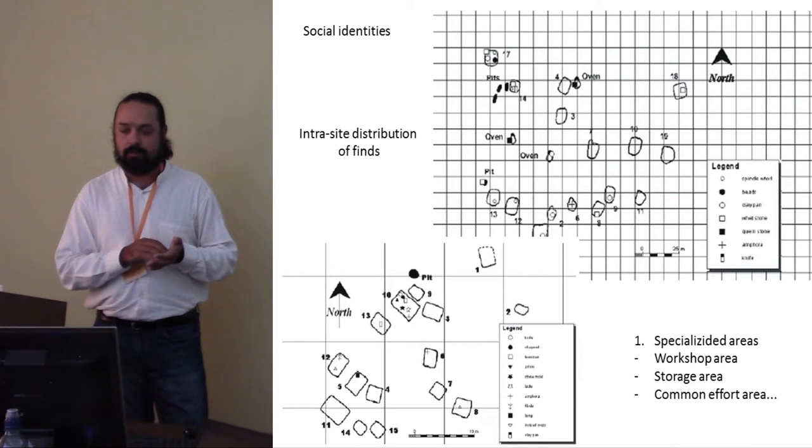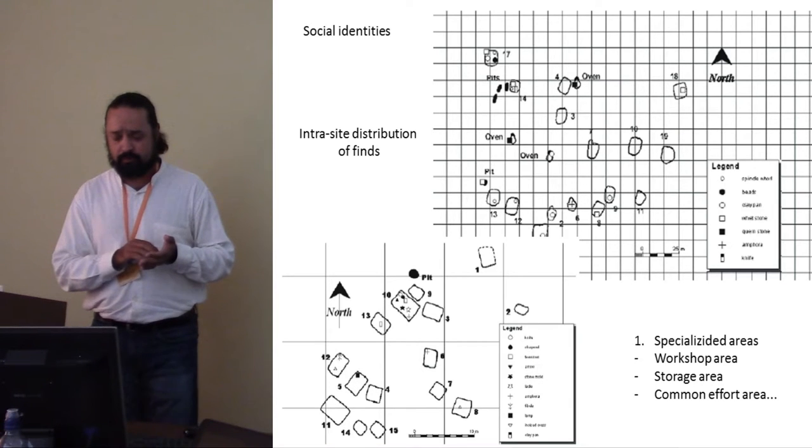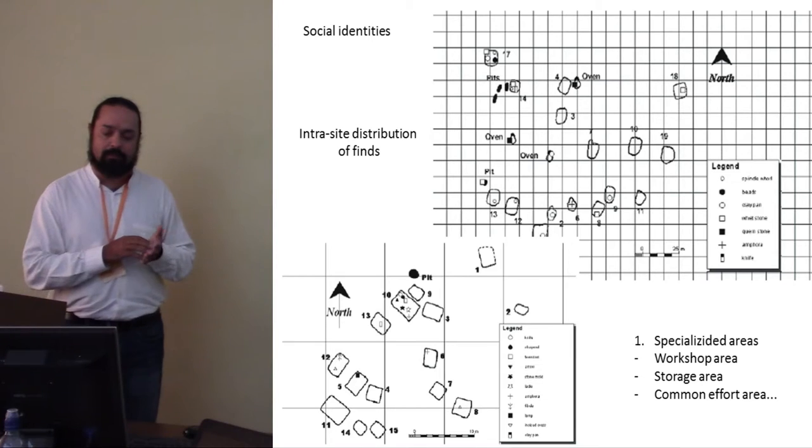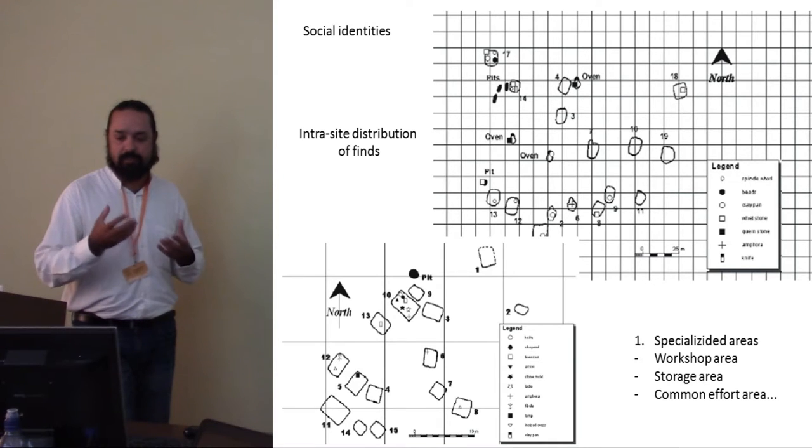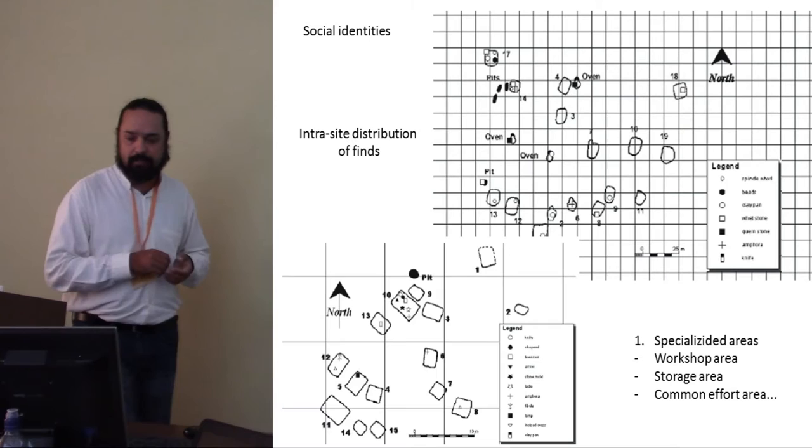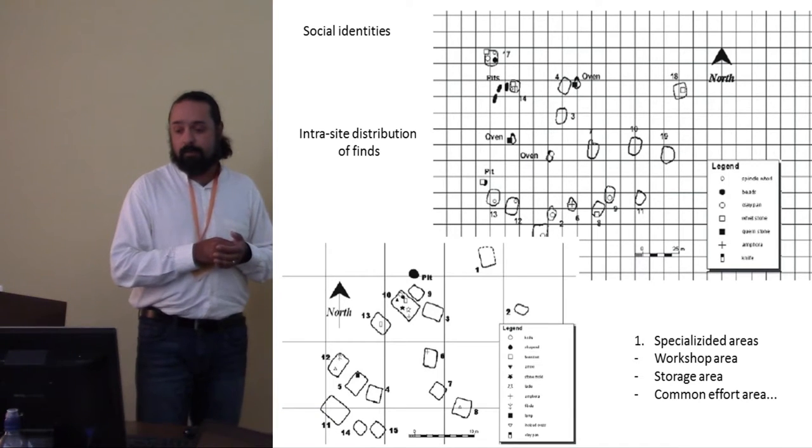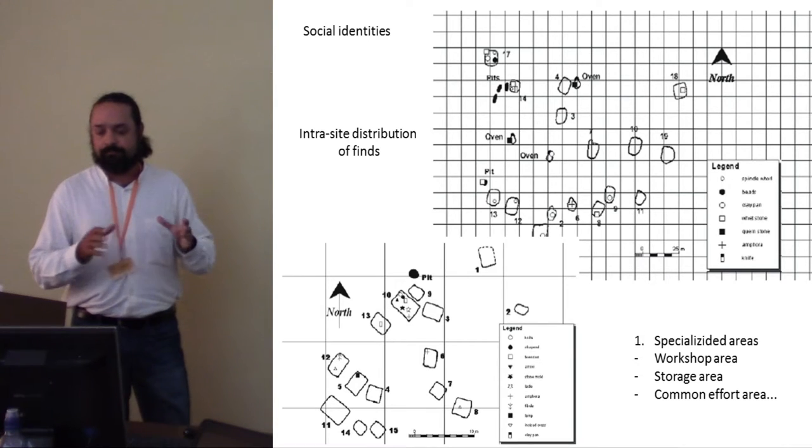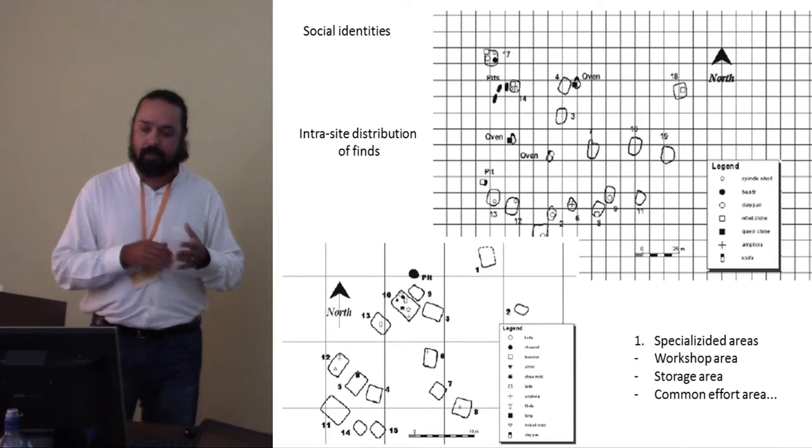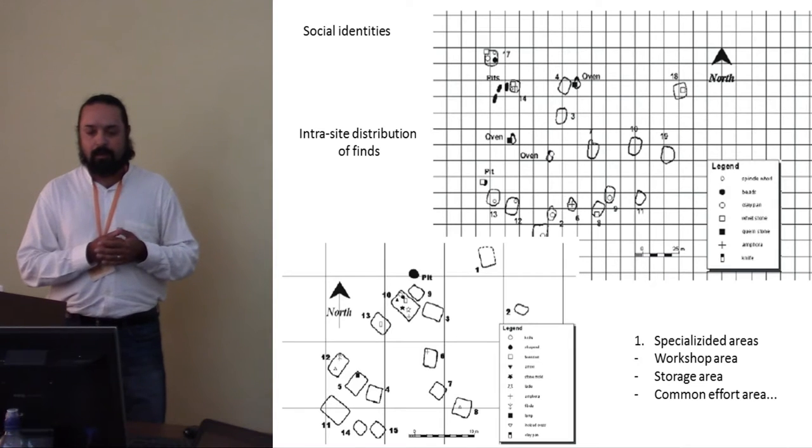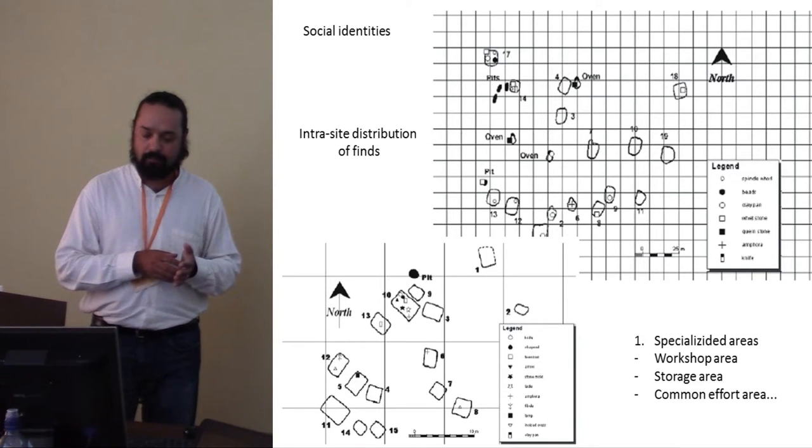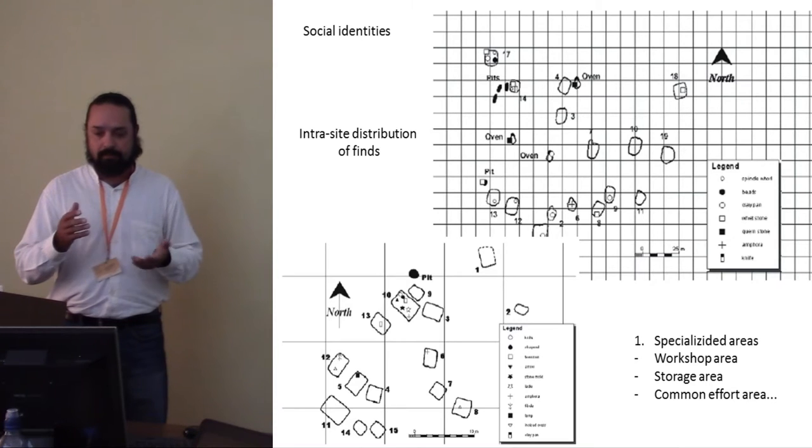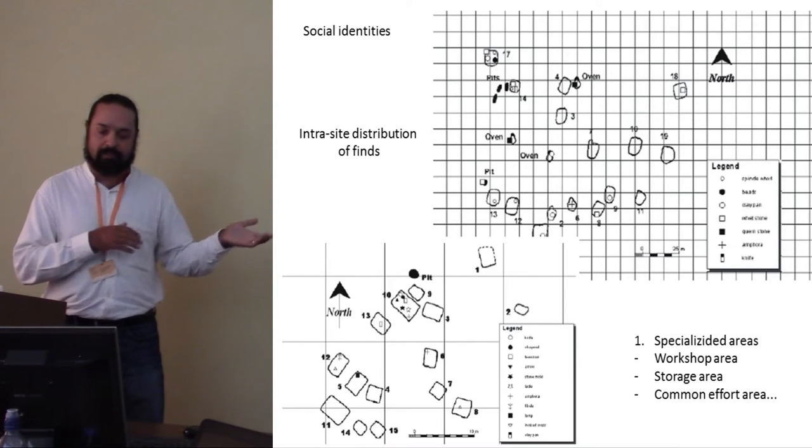It's an interesting distribution of finds basically. It's a problem to map every object that we can ascribe to a certain utility and try to find specialized areas inside the settlements. And those two examples can show something, that there are parts of the settlement where we found mostly iron tools or mostly specialized tools for making objects.